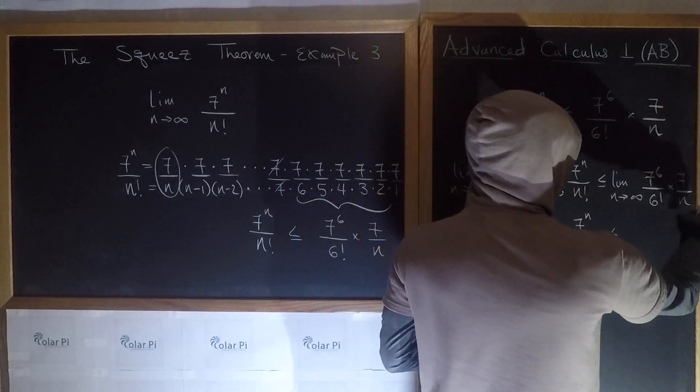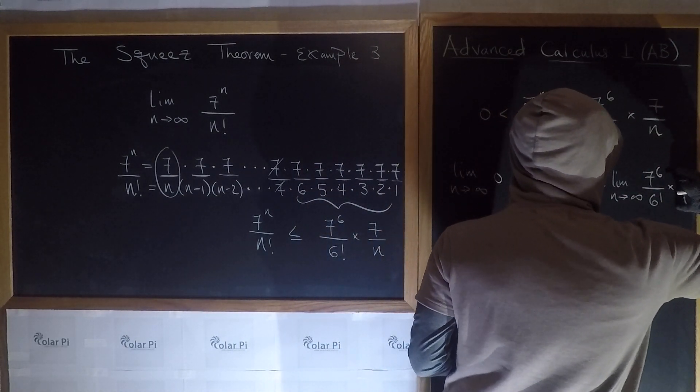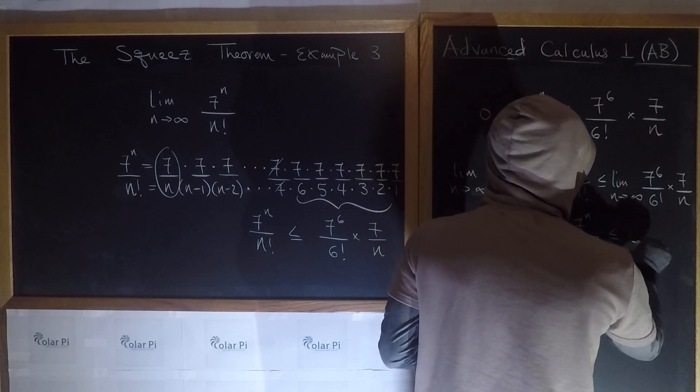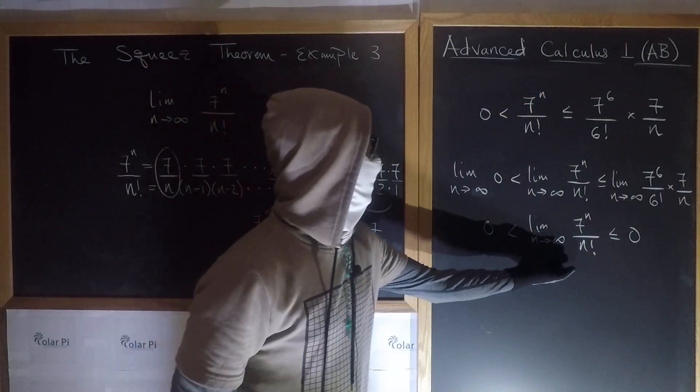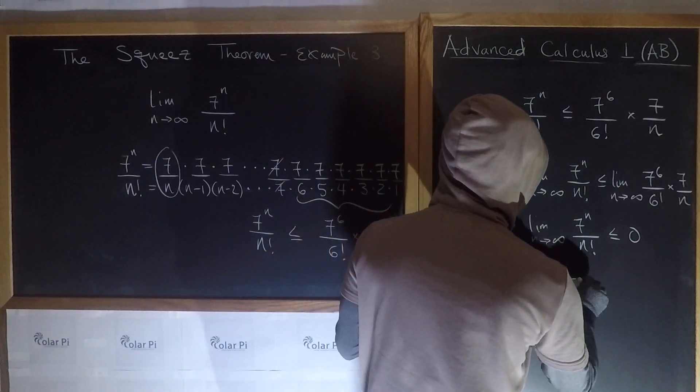Because as n goes to infinity, this is going to go to 0. And so we'll have 0 times whatever, who cares? And therefore, this here by the squeeze theorem is equal to 0.